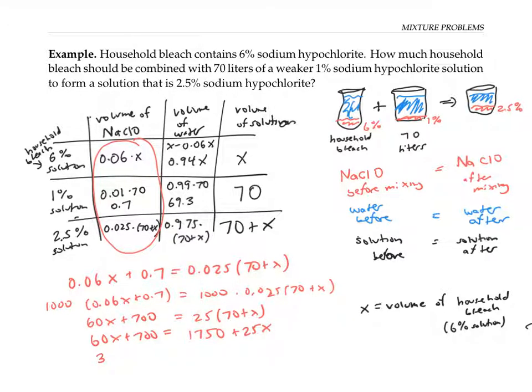So, let's see, 60 minus 25 is 35x is equal to 1050, which gives me that x equals 30 liters of the household bleach.